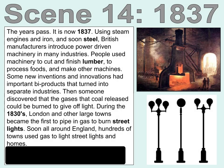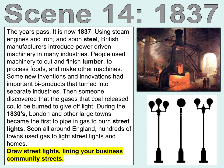Scene 14. The years pass — it is now 1837. Using steam engines and iron and soon steel, British manufacturers introduced power-driven machinery in many industries. People used machinery to cut and finish lumber, to process foods, and make other machines. Some new inventions and innovations had important by-products that turned into separate industries. Then someone discovered that the gases that coal released could be burned to give off light. During the 1830s, London and other large towns became the first to pipe in gas to burn streetlights. Soon, all around England, hundreds of towns used gas to light streetlights and homes. Draw streetlights lining your business community streets.